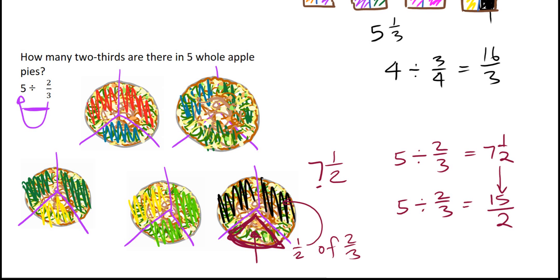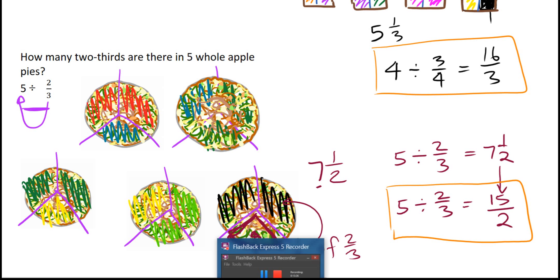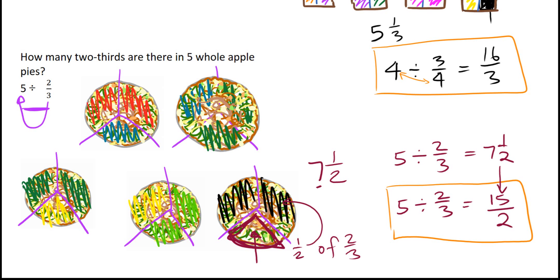Now let's look at the relationship in our numbers across those two examples. If I multiply the whole number 4 by the denominator, I get 16, and then 16 over 3 — that 3 comes from the numerator in the fraction. In the final example, 5 times 3 gives me 15, and then the numerator of the fraction appears in the denominator of the answer.